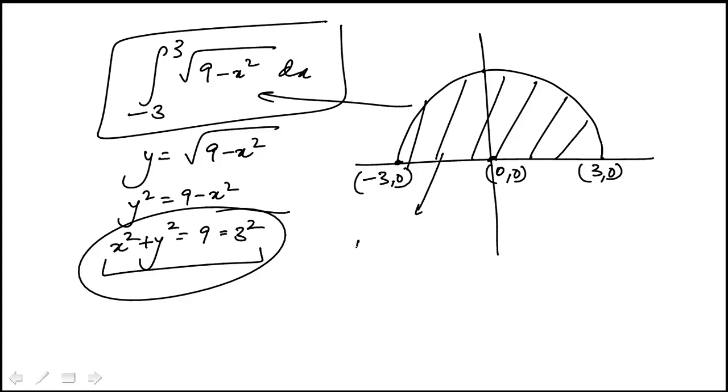So this is really just half the area of the corresponding circle. The area is pi r squared, so it's half of 9 pi, or 9 pi over 2, and that's answer choice D.